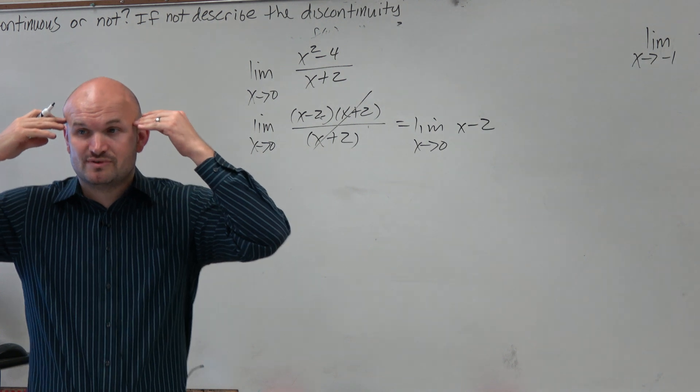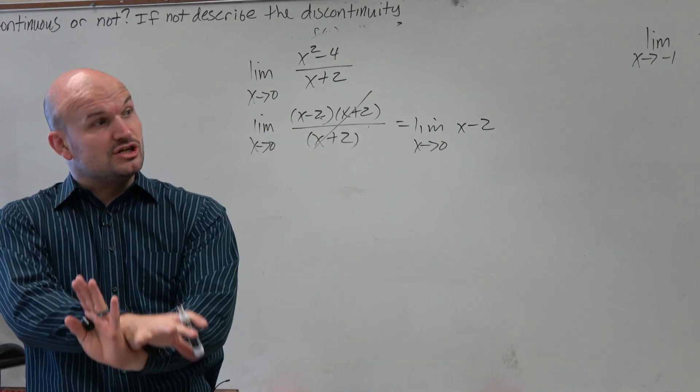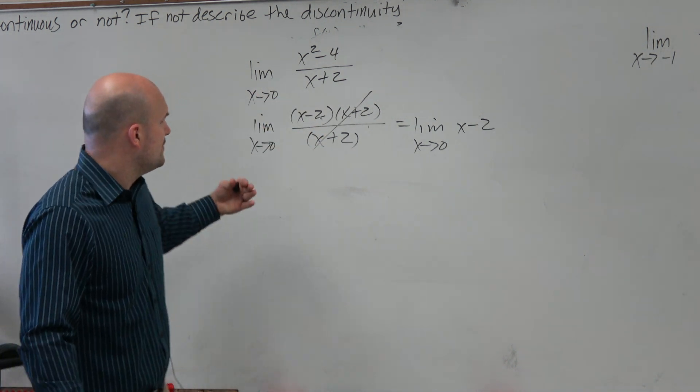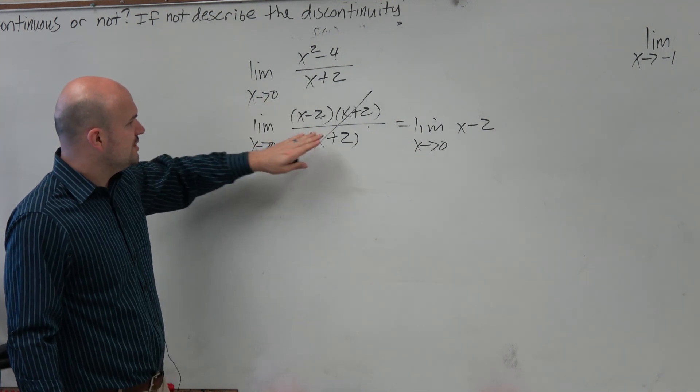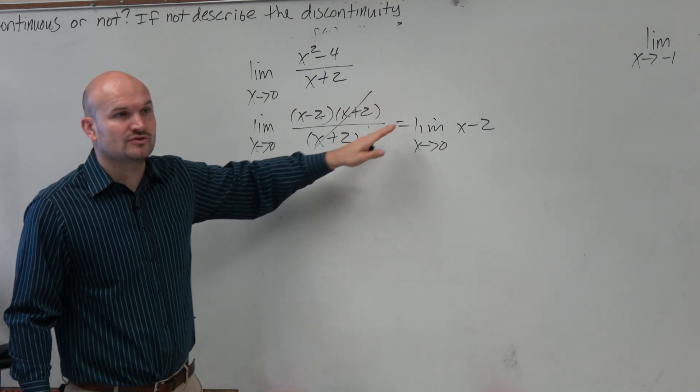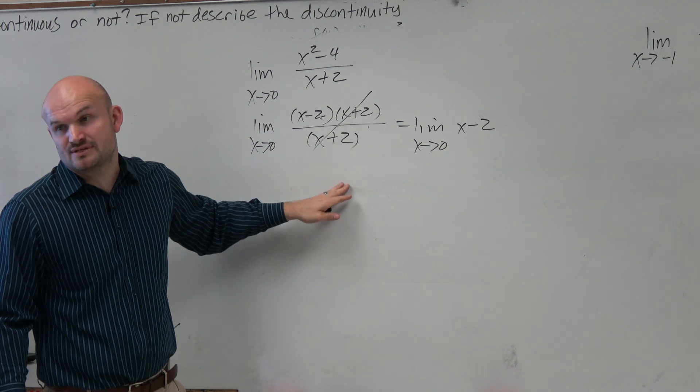Now, some of us get into this mindset of always simplifying, simplifying, which is good, because that's what we've taught. However, when we recognize - so we know that there's a discontinuity at x equal to negative 1. There's a hole at x equals negative 1, right?